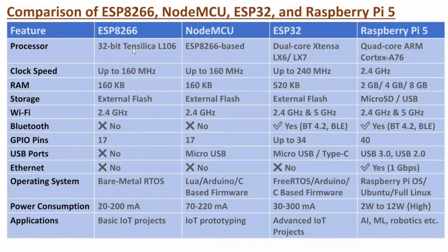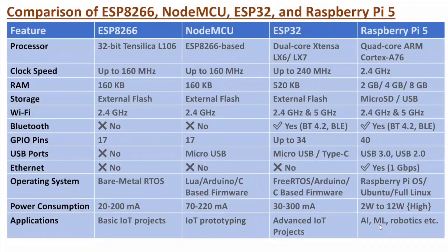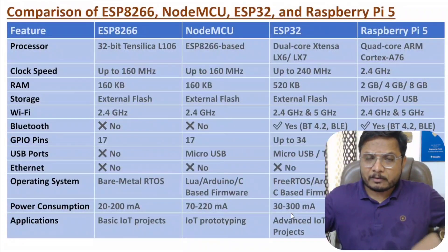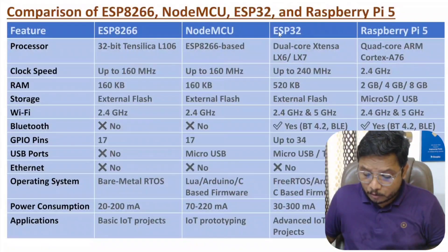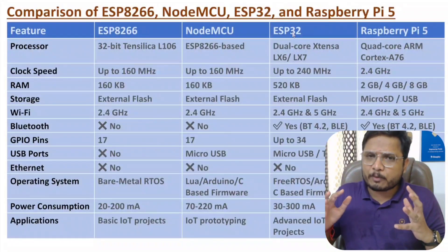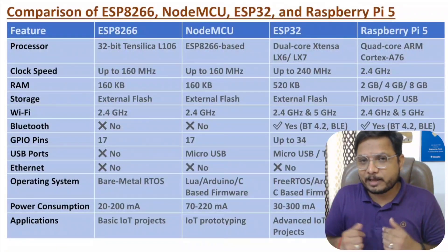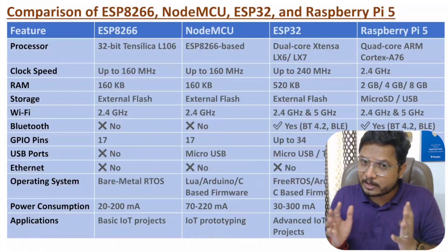In terms of applications, prefer ESP8266 for basic IoT projects, NodeMCU for IoT prototyping and moderately complex projects, ESP32 for advanced IoT projects, and Raspberry Pi 5 for high-end complexity involving AI, ML, and robotics. Based on your requirement, choose the appropriate IoT controller module. In future videos, I'll be using ESP32 to develop many projects to show how to build IoT applications. If you have any confusion, just place it in the comment section — I'll be happy to help. Thank you so much for watching this video.